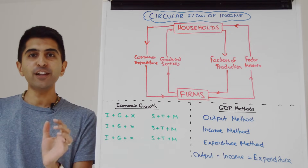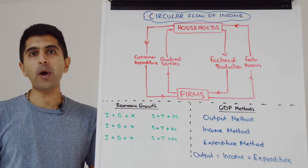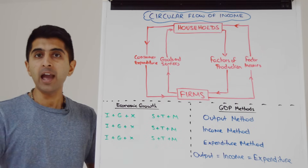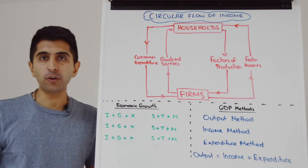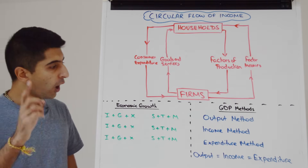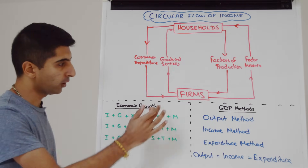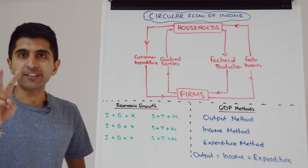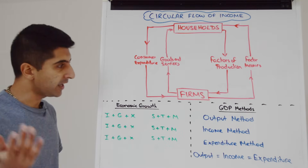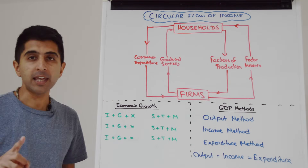Hi everybody. The circular flow of income is a very useful way of modeling the economy, and from this model we can derive two very important conclusions. One conclusion is how we can look at economic growth; the second is how we can measure economic growth, i.e. how we can get to GDP.